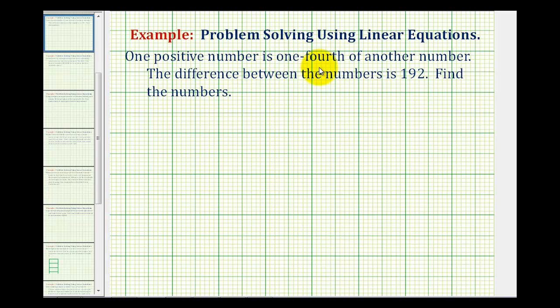One positive number is one-fourth of another number. The difference between the numbers is 192. We want to find the numbers.